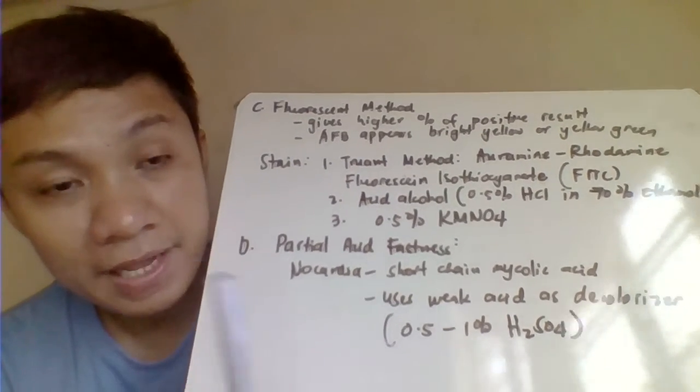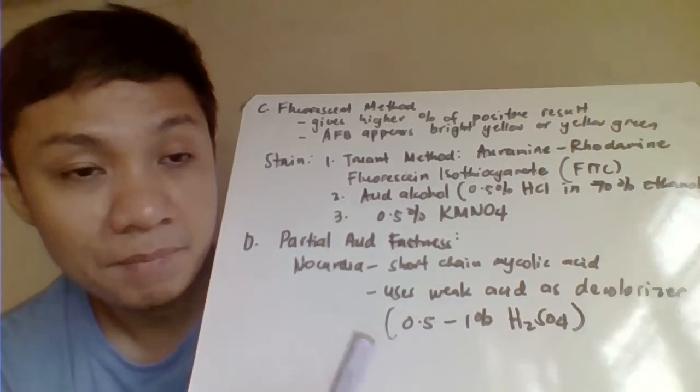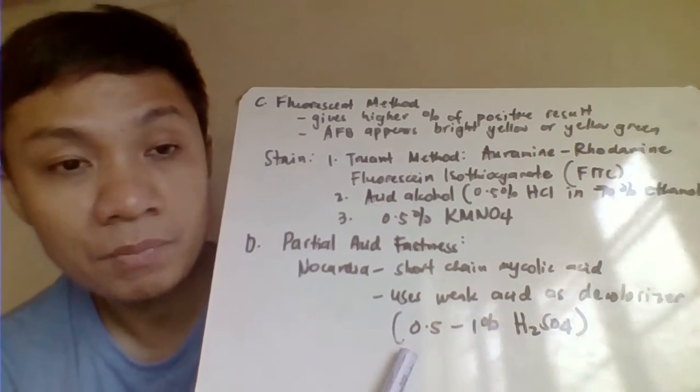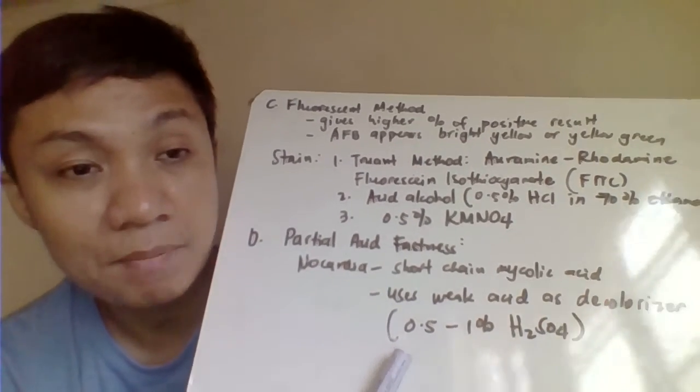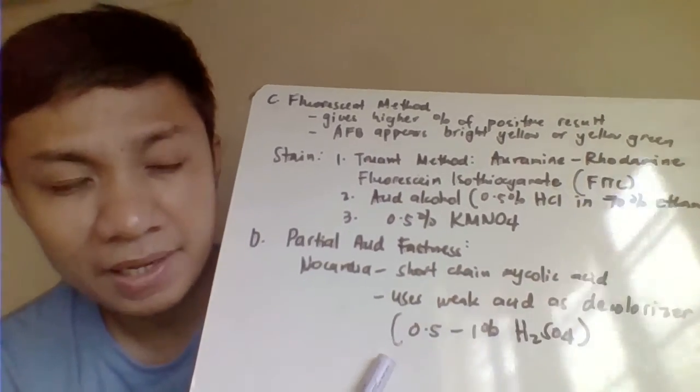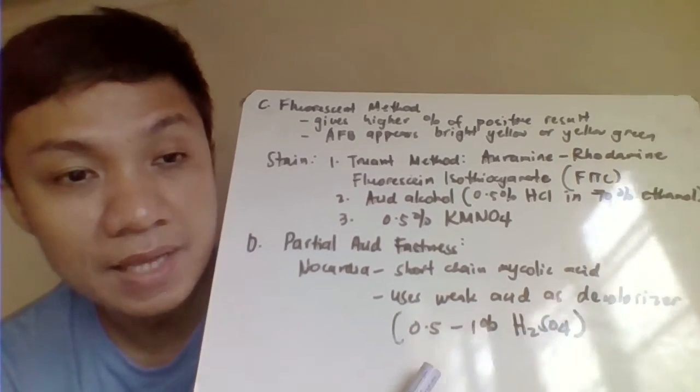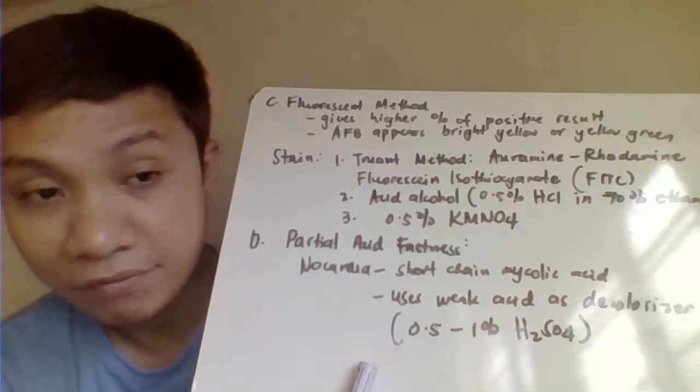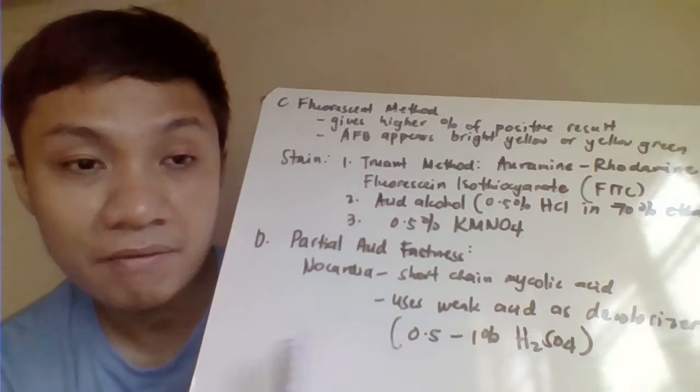And therefore, kaya pag nag-suspect mo Nocardia, ang presence sa specimen ng patient natin, so dapat yung acid. Sulfuric acid, 0.5 to 1% ang ating decolorizer at hindi acid alcohol. Kasi magiging pag-usual na siya yung ginamit mo, like in the case of your Ziehl-Neelsen and Kinyon, magiging negative ang result mo. That's false negative. Okay, so that's all with our acid-fast staining reaction.